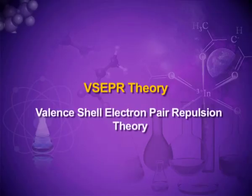These molecules also have some shape or other. Sidgwick and Powell suggested the Valence Shell Electron Pair Repulsion theory to explain the shape of different molecules. This is also known in short as VSEPR theory. Today we will study about Valence Shell Electron Pair Repulsion theory.